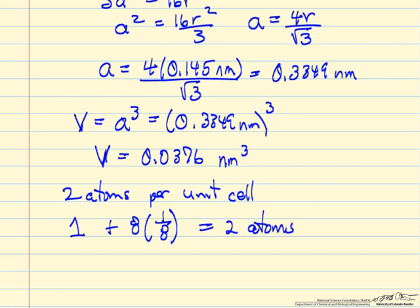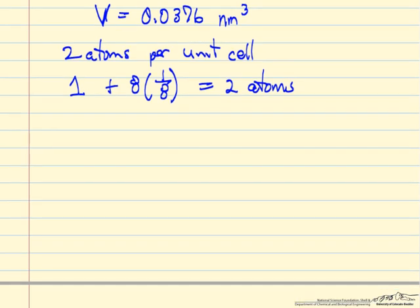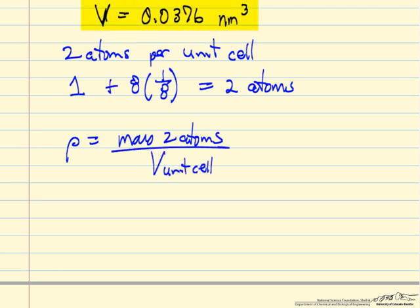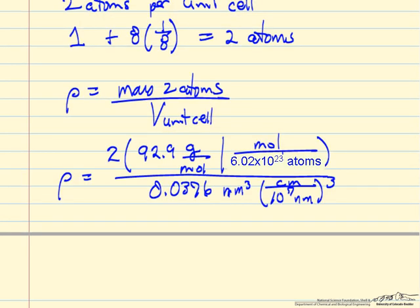And so now we have all the information to calculate the density. Density is the mass of 2 atoms divided by the volume of the unit cell. And this here is the unit cell volume. So I've substituted the numbers in. 2 atoms. The atomic weight, 92.9 grams per mole. We don't have a mole of atoms, we only have 2 atoms. 6.023 times 10^23 atoms per mole. So this now, one atom. This is the second atom.